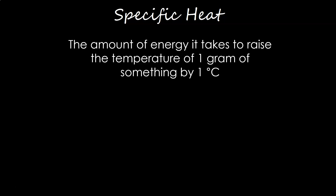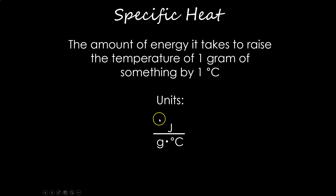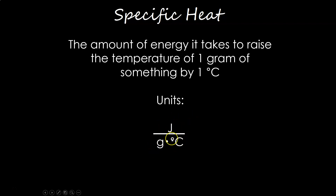Depending on the substance, it might be able to hold on to just a little bit of energy, or it might be able to hold on to a lot. For calculations with specific heat, we use units of joules per gram Celsius — joules is a measure of energy, divided by grams times Celsius. The way we say this is joules per gram °C: the amount of energy one gram can absorb when it goes up one degree Celsius.